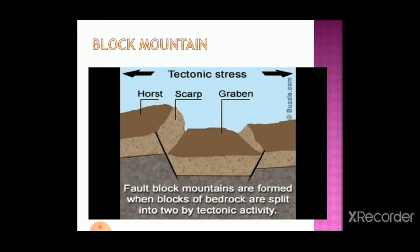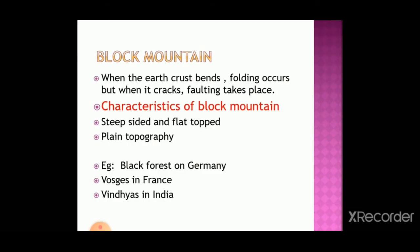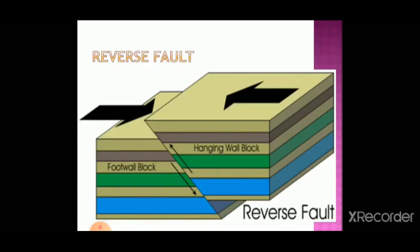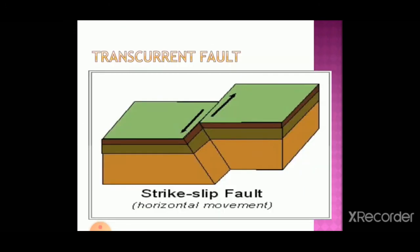Flat block mountains are formed when blocks of bedrock are split by tectonic activities. When the earth's crust bends, folding occurs, but when it cracks, faulting occurs. Characteristics of block mountains are steep sides and flat tops. Black Forest in Germany, Vosges in France, and Vindhyas in India are examples of block mountains. There are different types of faults: normal fault, reverse fault, and transcurrent fault — these are the different ways in which block mountains are formed.